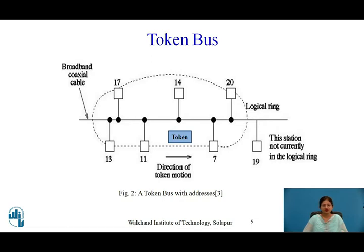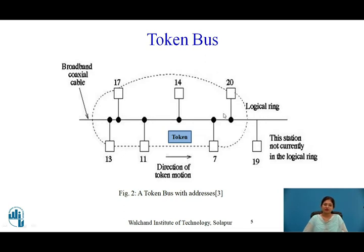In this diagram, stations are physically connected in a linear topology. Stations that want to transmit data enter the logical ring. Here, stations 20, 17, 13, 11, and 7 are in the logical ring, whereas stations 14 and 19 are not part of the logical ring — meaning they have no data to transmit. Priority is given to station 20 because its address is the highest among those in the logical ring.